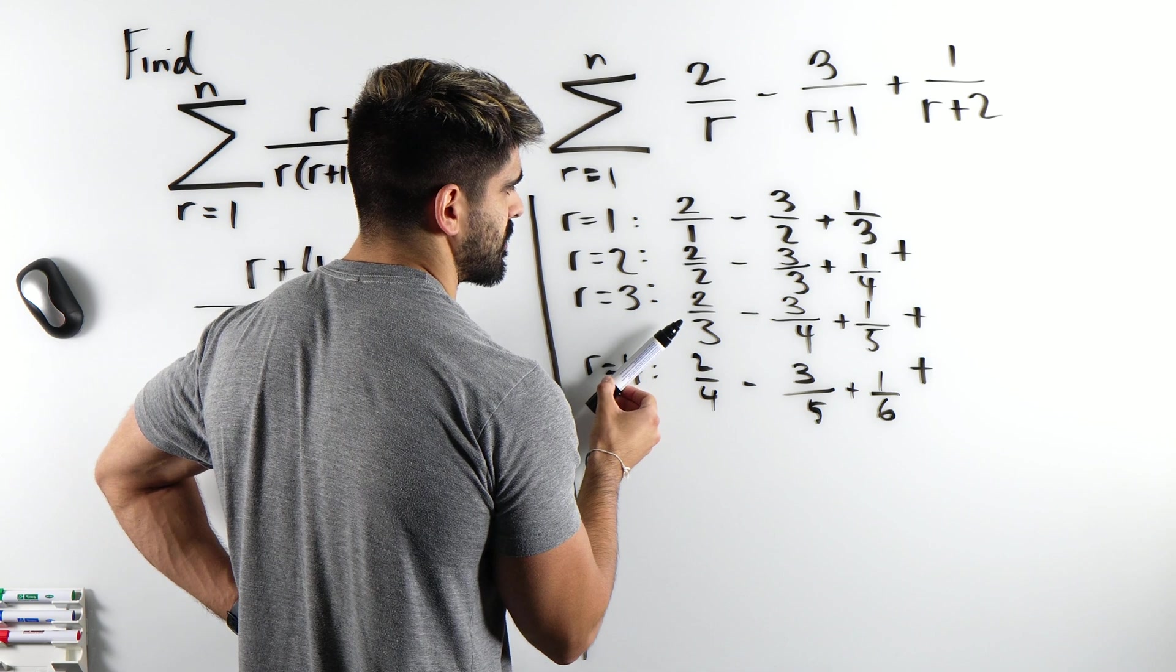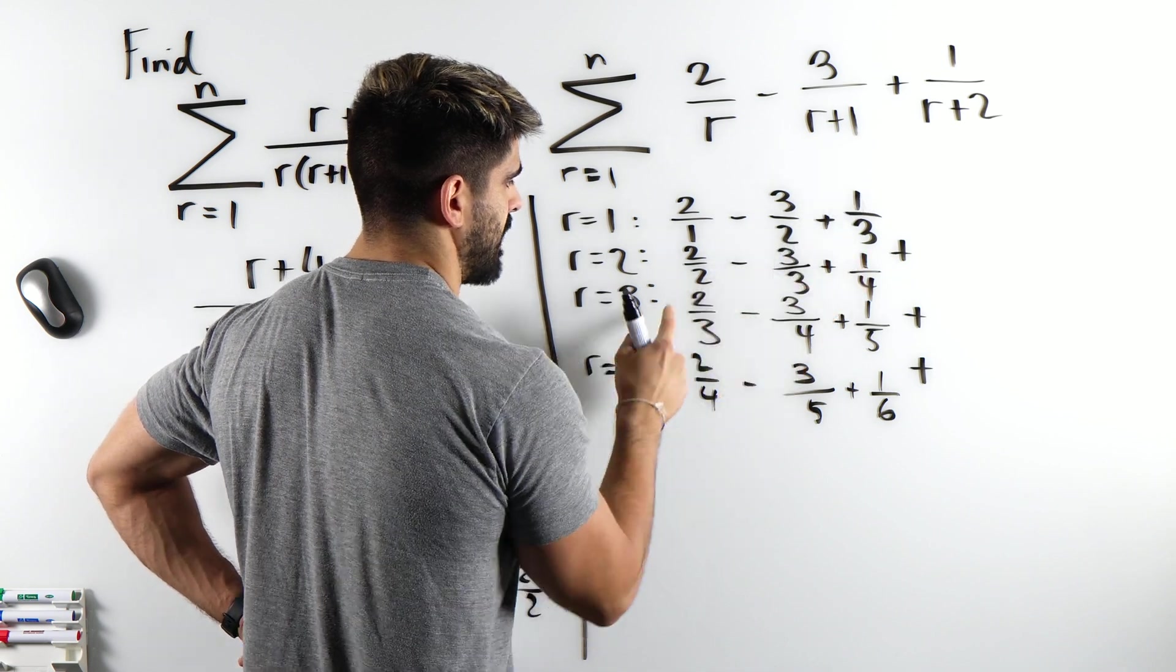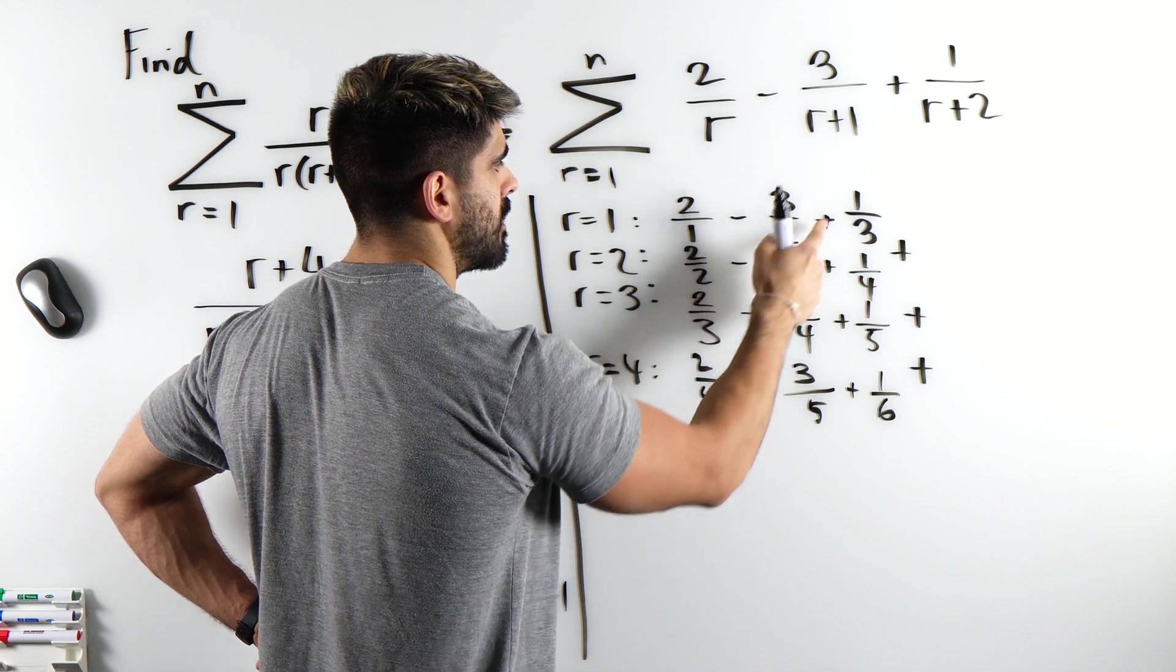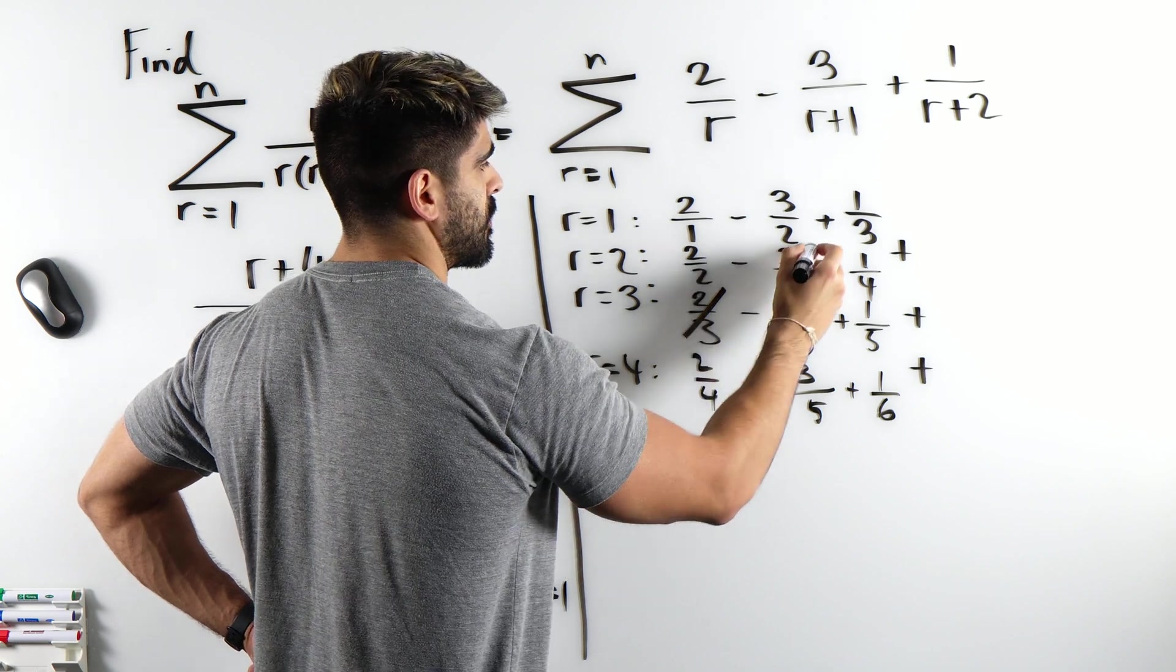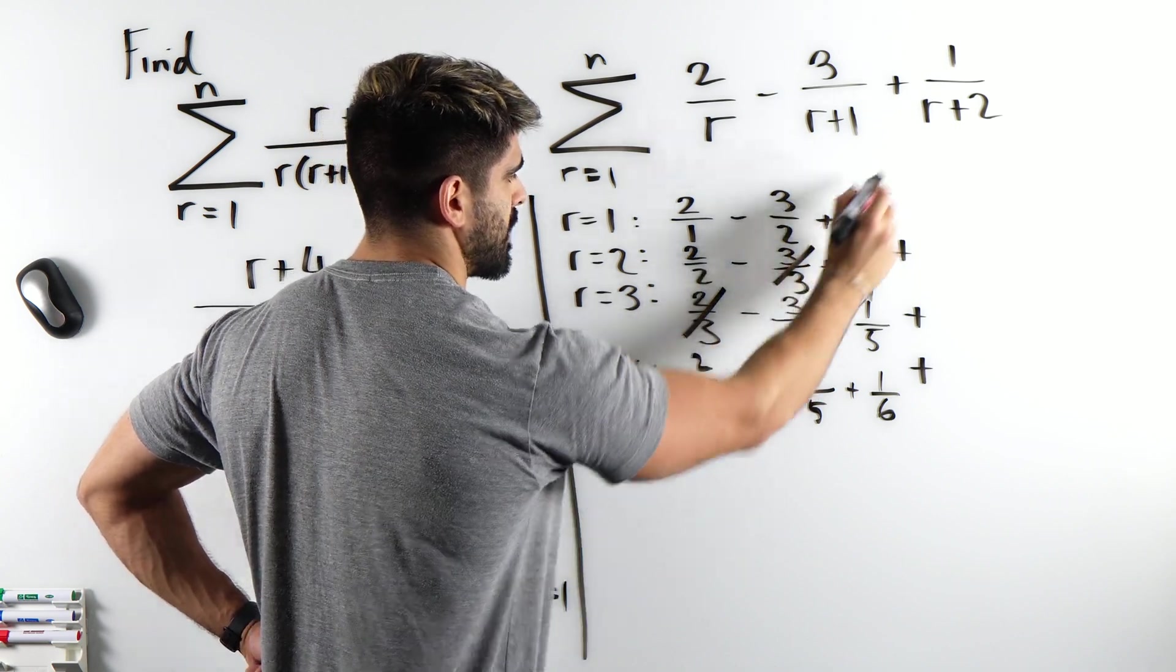when I look at the 3s, I have 2 minus 3 which is minus 1 plus 1 which is 0. Meaning the over 3s are cancelling along that diagonal.